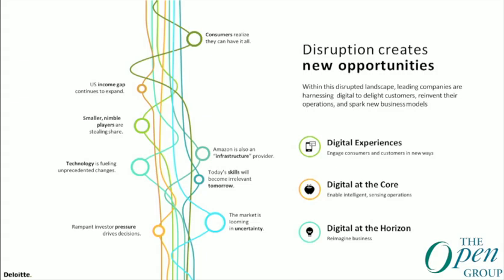We break digital transformation down into three areas. First, digital experiences — how we engage with our customers, whether at the enterprise or consumer level. Then we talk about digital at the core: taking your enterprise and making it more intelligent, making it an elastic sensing organization. When Johan was talking about machine learning and AI, we see that pervasive in every successful digital strategy.